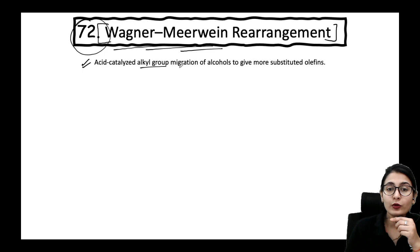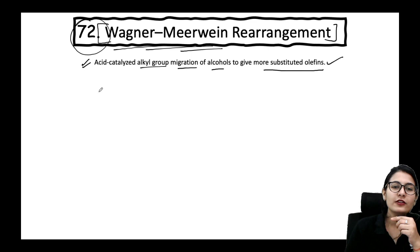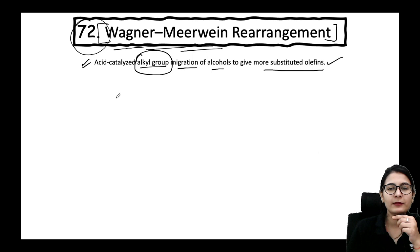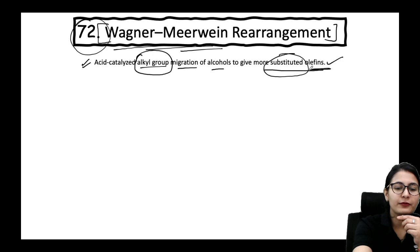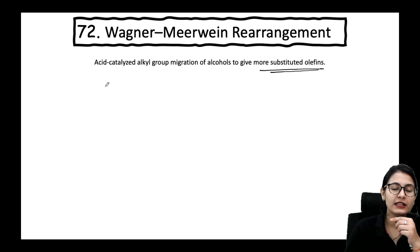Wagner-Meerwein Rearrangement is the acid-catalyzed alkyl group migration of alcohols to give the more substituted olefins. The driving force of the reaction is to get the more substituted alkene, and it will be much clearer when you see this example.